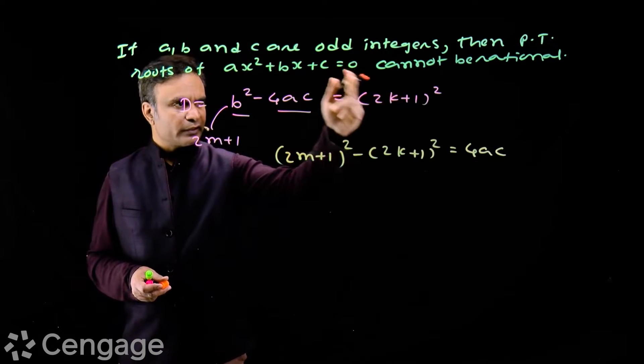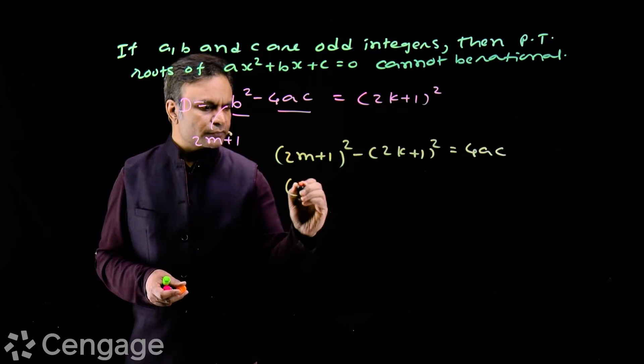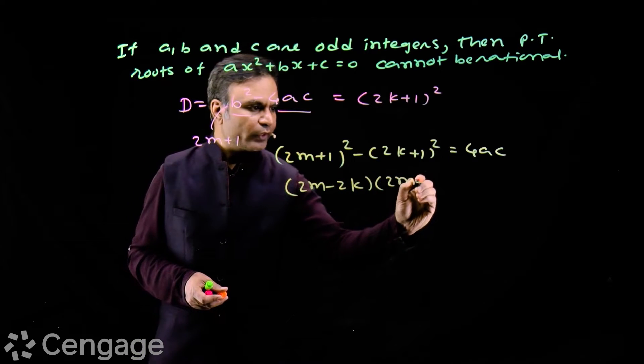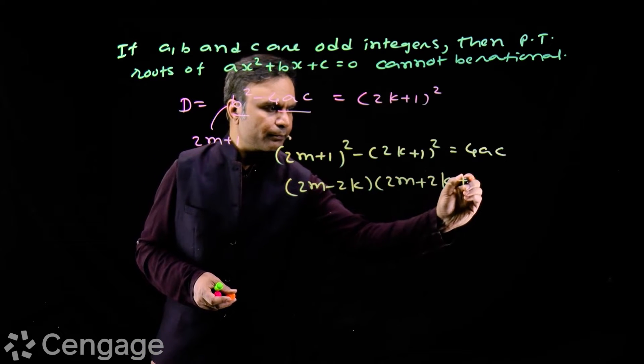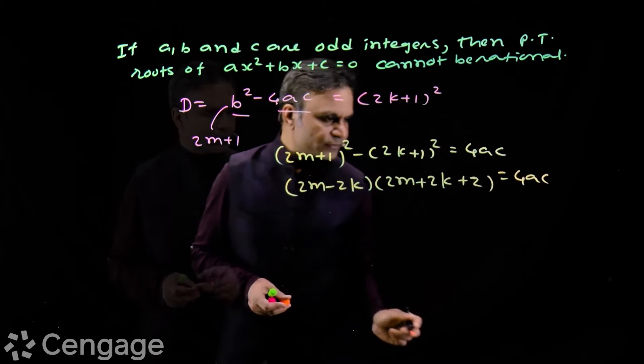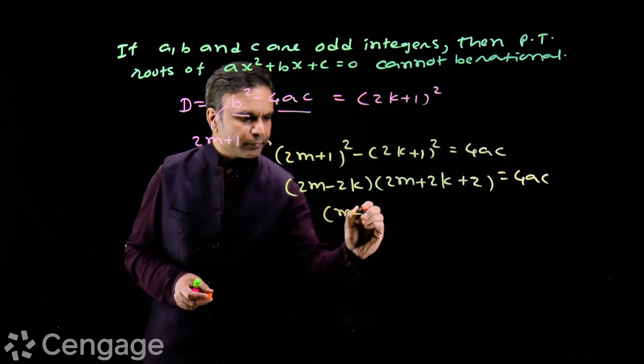Now we have factors of this: (2m-2k) multiply by (2m+2k+2), this is equal to 4ac. We have 2 common from this bracket and this bracket, so we can write (m-k) multiply by (m+k+1) is equal to ac.